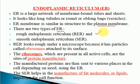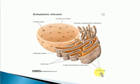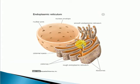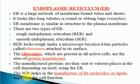There are two types of endoplasmic reticulum: the rough type (RER) and the smooth endoplasmic reticulum (SER). RER looks rough because it has ribosomes attached to its surface. Ribosomes are the sites of protein manufacture — the formation of proteins takes place on the ribosomes — and that is why they are called the protein factory of the cell. The manufactured proteins are then sent to various places depending on need using the SER.